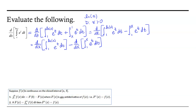We can now start applying the fundamental theorem of calculus. The upper limit of integration gets substituted into the integrand, and we watch for the chain rule. For the first term, we substitute the natural log of x for t, and since that upper limit is a function of x, we multiply by the derivative of the natural log of x. For the second term, the upper limit is just x and the lower limit is a constant, so we simply get eˣ.